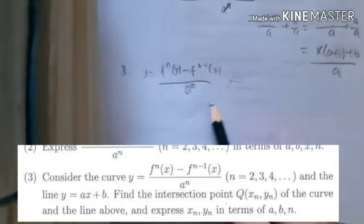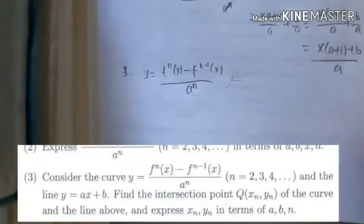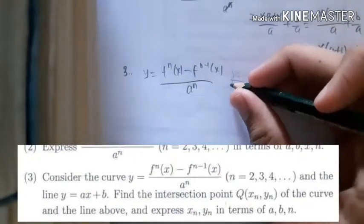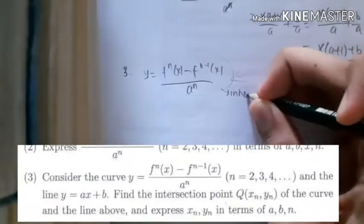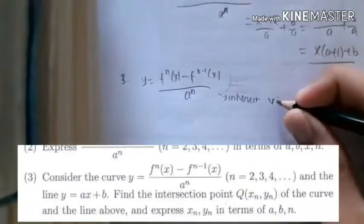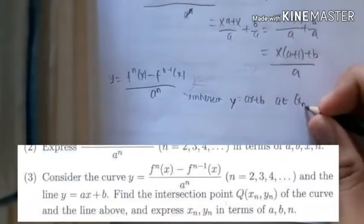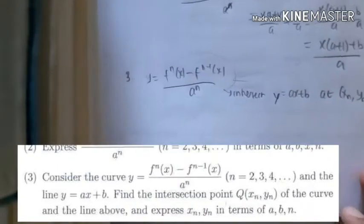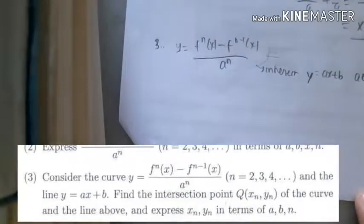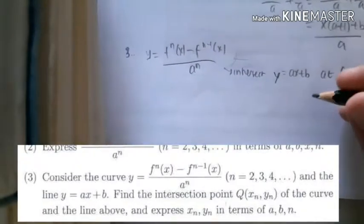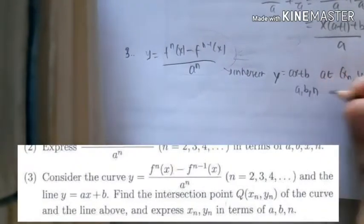If we consider this as a curve, and it intersects y equals ax plus b at x_n, y_n. Now we have to find the point of that intersection and they say we have to give the answer in terms of a, b, n.